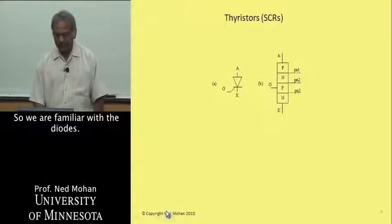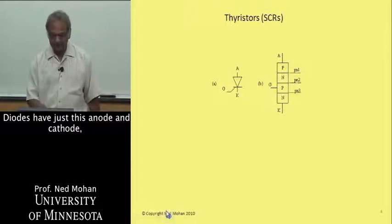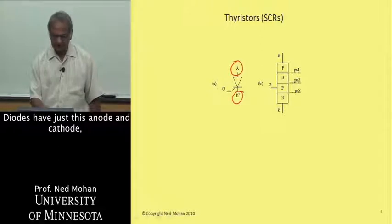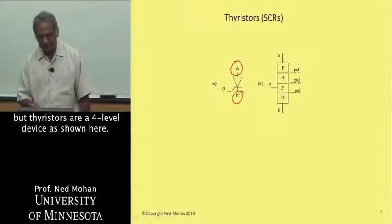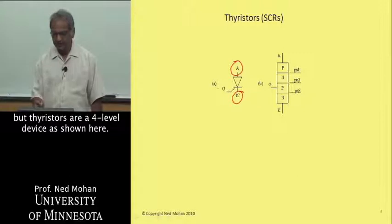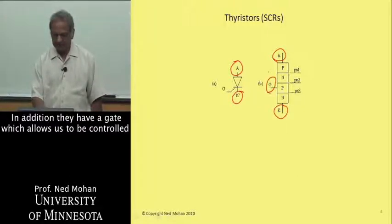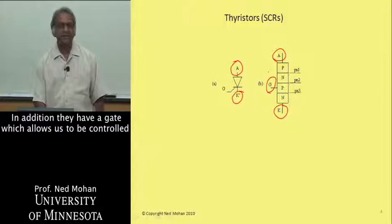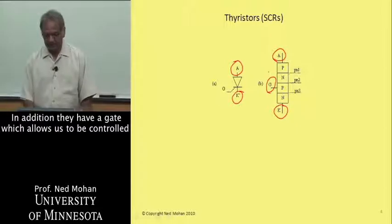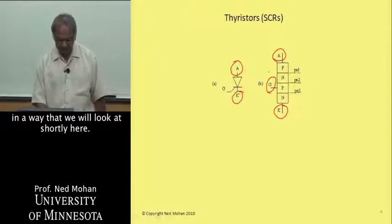We are familiar with diodes. Diodes have just an anode and cathode. But thyristors are a four-layer device, as shown here. They have an anode, they have a cathode, and in addition they have a gate, which allows them to be controlled in a way that we will look at shortly.